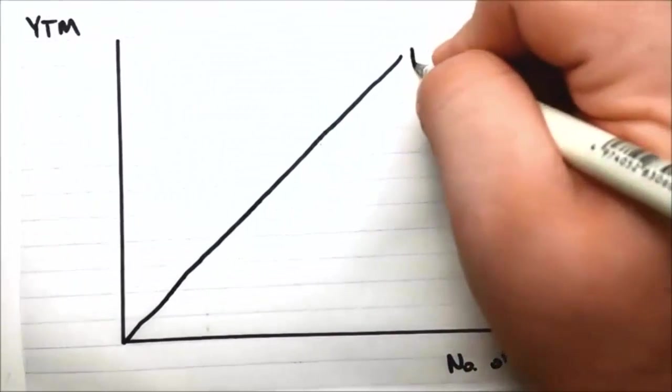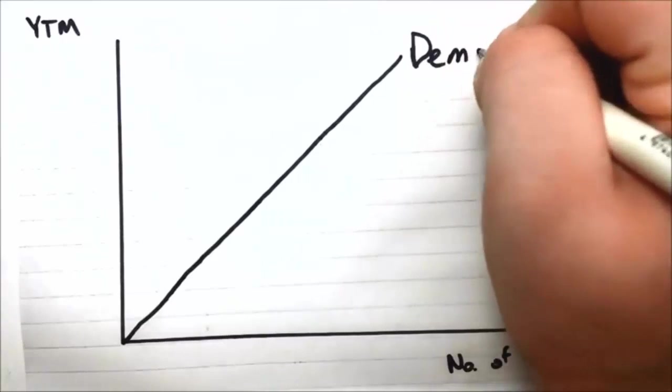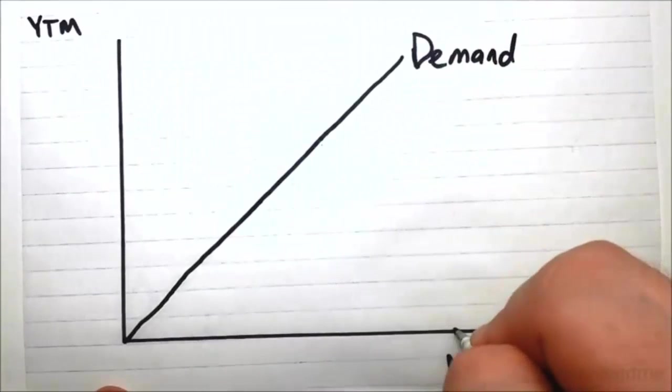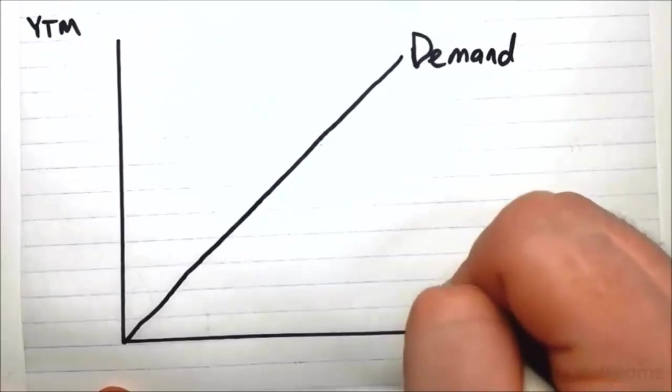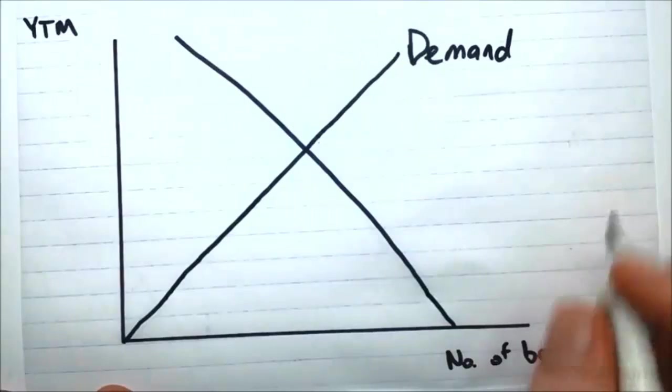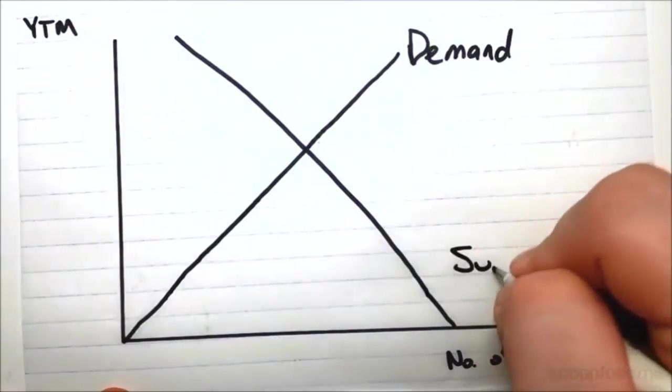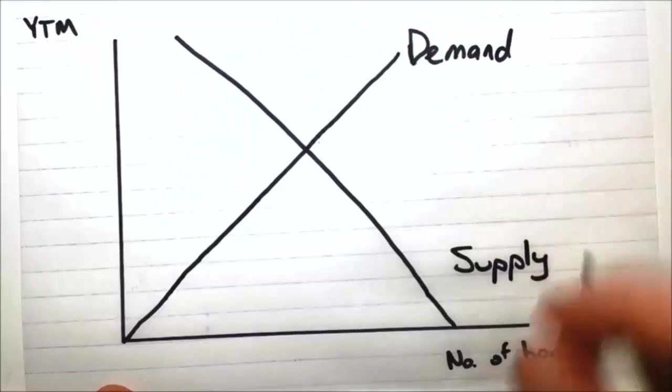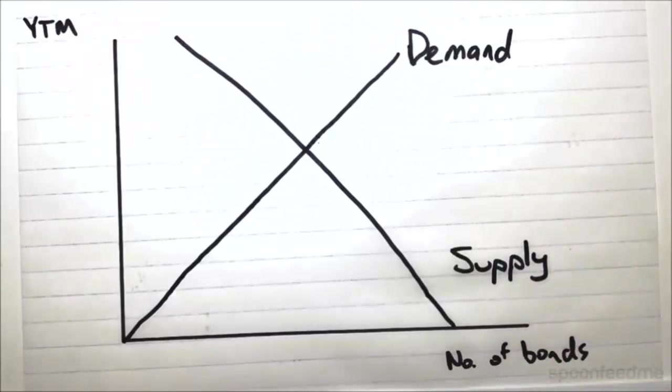However, we also have a supply that decreases in the number of bonds as the yield to maturity increases. And this is because the yield to maturity can also be thought of as the effective interest rate that the sellers are paying on the debt that they've taken. Remember from our last video, bonds are a debt instrument. And the sellers are taking on debt and then paying it back via the coupons and all that.